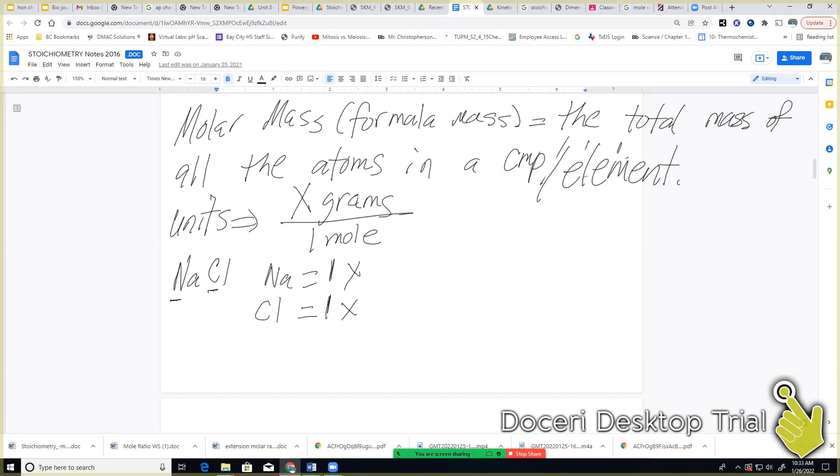All right. What did y'all get for sodium? 22.99. And then what'd you get for chlorine? 35.45. I'm going to multiply it through. And then I just simply add them up. And that's going to give me my total molar mass for sodium chloride, 58.44 grams per one mole.